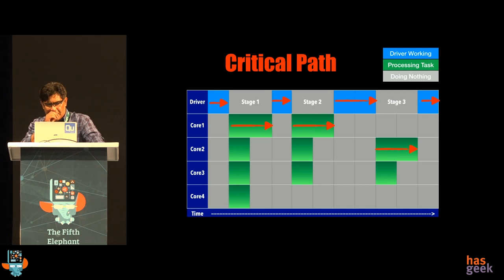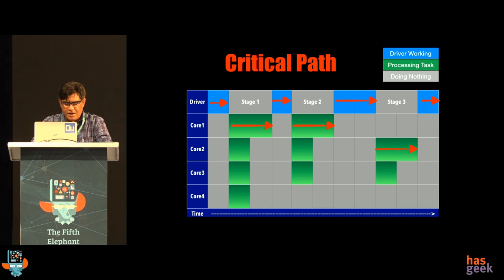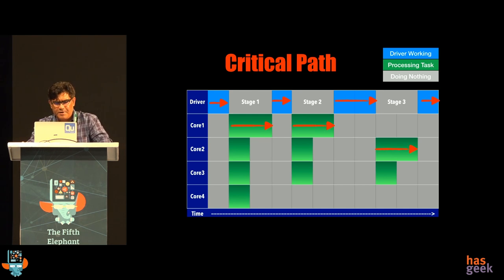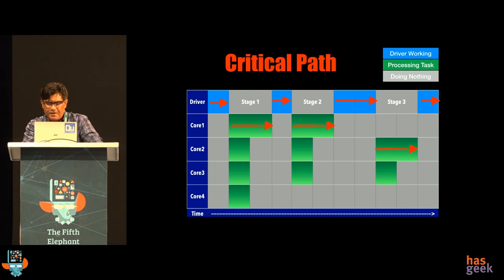That brings me to the notion of critical path. Following the arrows in this diagram defines the critical path. The definition is: all the time spent in the driver, plus the time spent on the largest task in each of the stages. This is a little simplified in the sense that some stages can run in parallel, so actual computation requires you to look at the max between parallel stages — but generally the idea is the same.